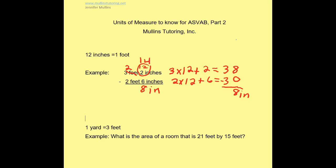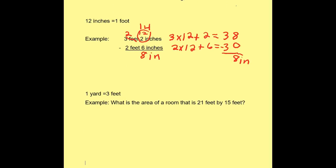So let's go ahead and look at the second example. 1 yard is equal to 3 feet. And by knowing this conversion, I can solve a problem. Because on the test, a lot of times they're going to go from one unit to another. So in this question, what is the area of a room that is 21 feet by 15 feet.